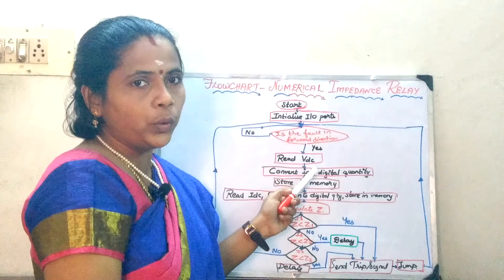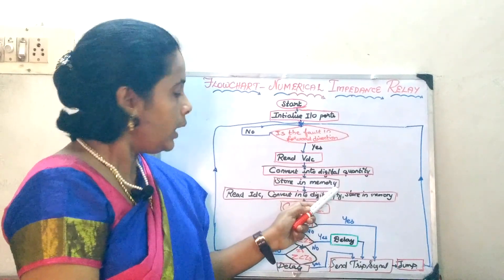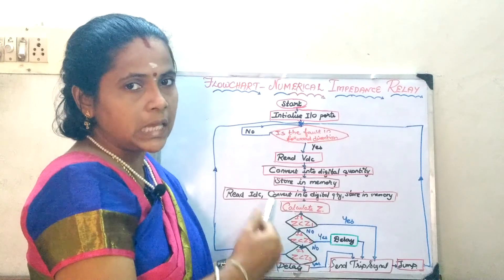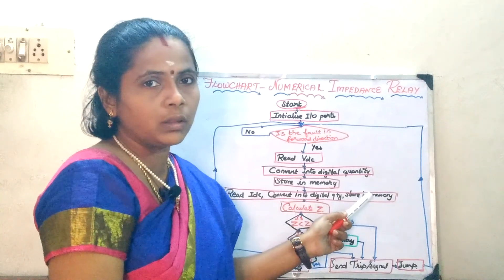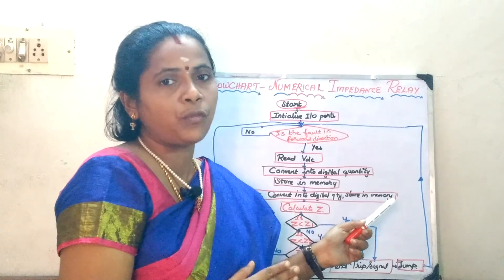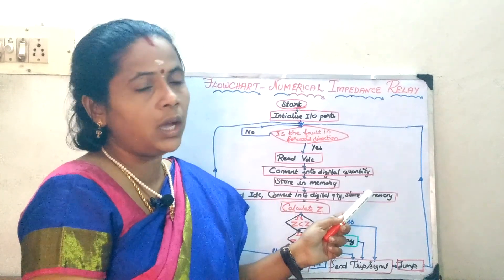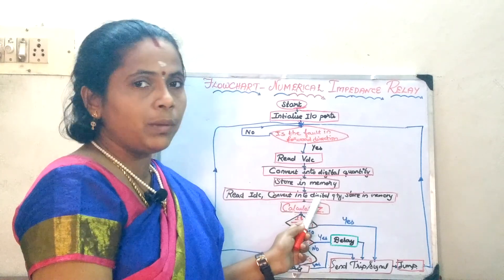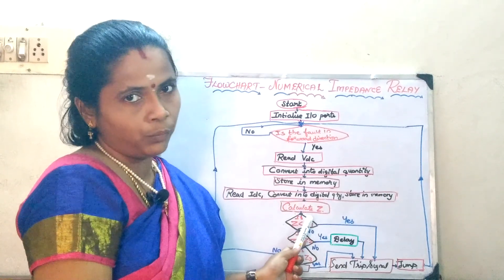Once you have computed your VDC, converted it to digital and stored it in the memory, the next thing is to read the IDC — the same way you convert it into digitized quantity and store it in the memory. Now, with both VDC and IDC available in digitized form, based on this V/I ratio, you can compute the impedance.